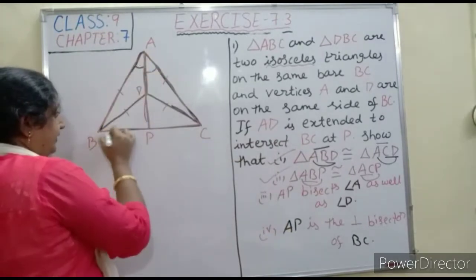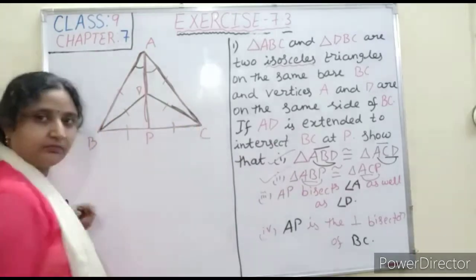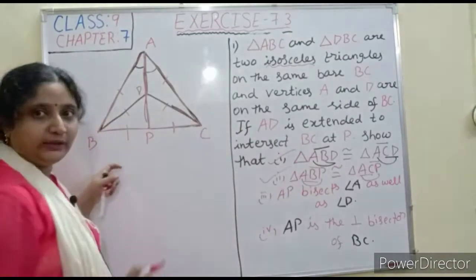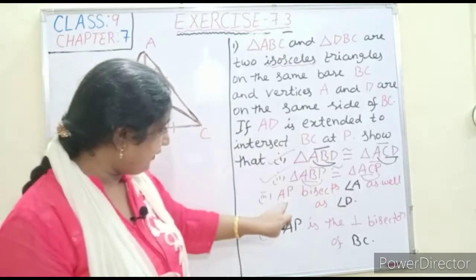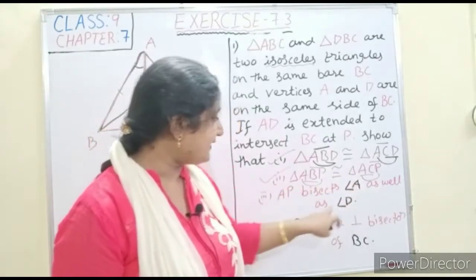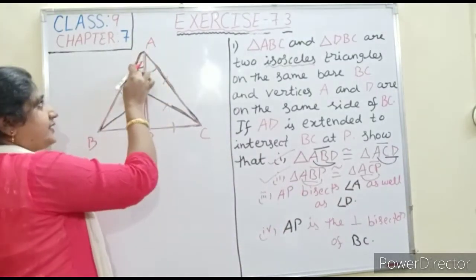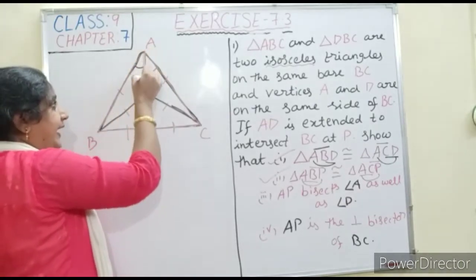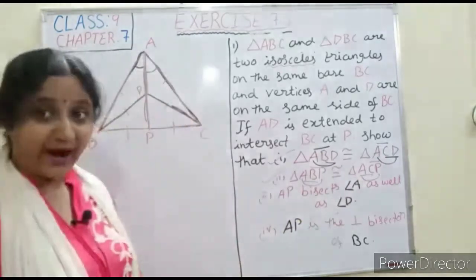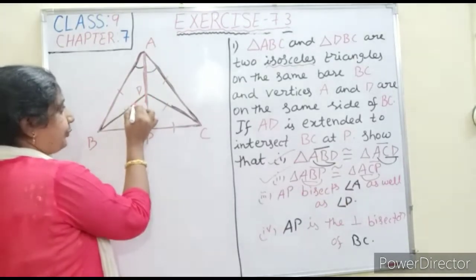Now we have to prove that AP bisects angle A as well as angle D. When these two corresponding angles from part one are equal, the AP line bisects angle A — that is already proved. But now we also have to prove that AP bisects angle D, meaning we have to show the two sub-angles at D are equal.